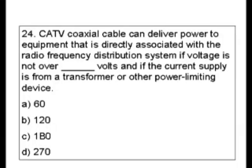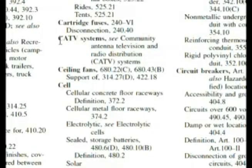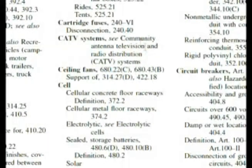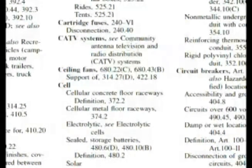So we have CATV is what I want to look under, and I also want you to keep the phrase 'power limiting device' in mind. Let's go to the index and look under CATV. You should remember that in the index, CATV systems refers to Community Antenna Television and Radio Distribution Systems — you don't want to waste time going to CATV systems directly. You want to go to Community Antenna Television.